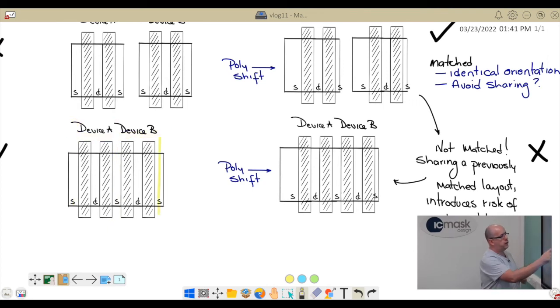After the mask shift, the source of A gets bigger, the source of B actually gets smaller, and all the internal ones shift. So by sharing these two devices, we now have a risk of mismatch from mask shift or mask misalignment.